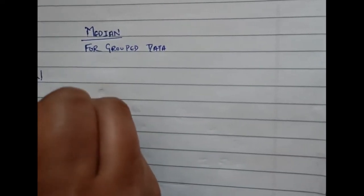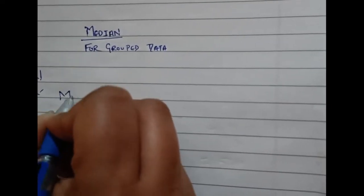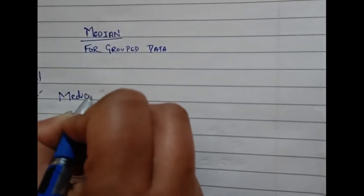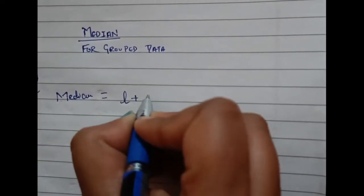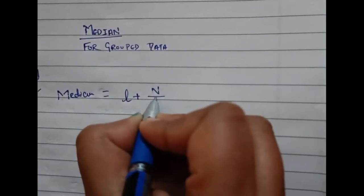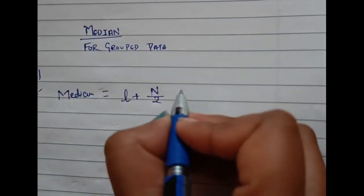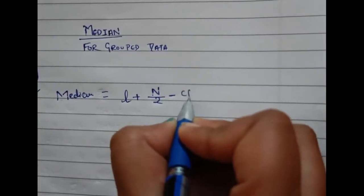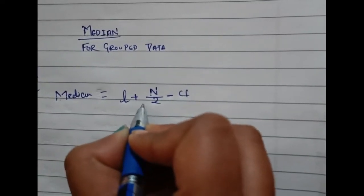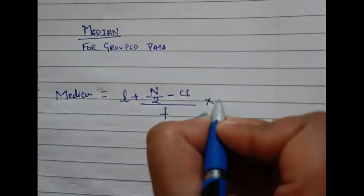Median is L plus n by 2—n as we have told, n was the frequency—n by 2 minus CF, which is the cumulative frequency, upon F, which is the frequency, into I.